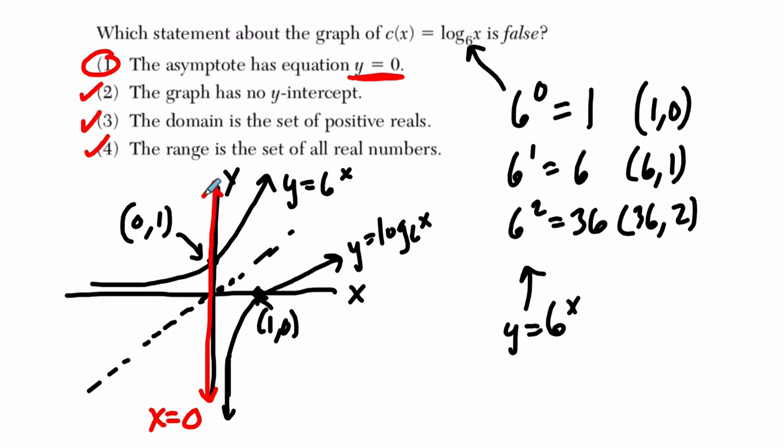So the range would not include all real numbers if there was some kind of limitation, like an asymptote or something that it couldn't reach. But logarithms typically will, the range will be the set of all real numbers. All right. Hope this helped.